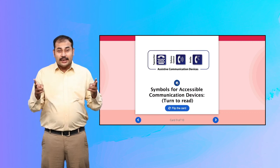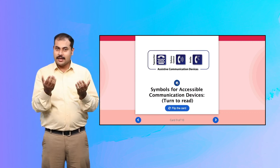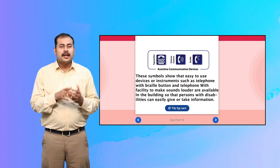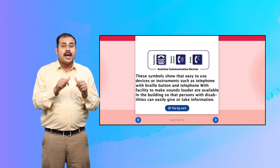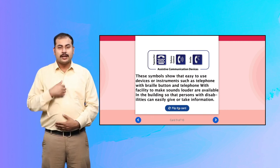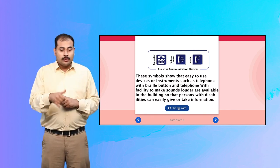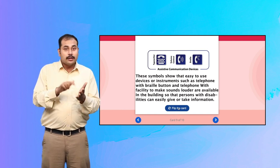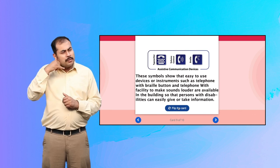Symbols for Accessible Communication Devices. These symbols show that easy-to-use devices or instruments such as telephone with braille button and telephone with facility to make sounds louder are available in the building so that persons with disabilities can easily give or take information.